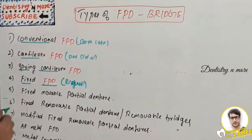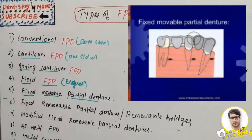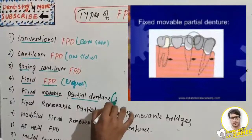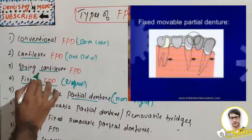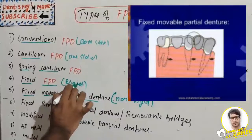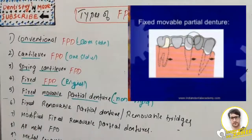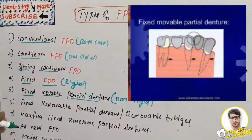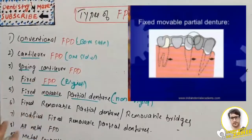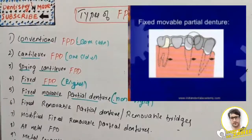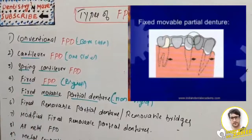Fixed-movable partial denture is defined as a fixed partial denture having one or more non-rigid connectors. Unlike fixed-fixed partial denture which has rigid connectors, this has non-rigid connectors because it is a movable partial denture. Commonly used non-rigid connectors include the tenon-mortise connectors, loop connectors, split pontic connectors, and cross-pinned and wing connectors.